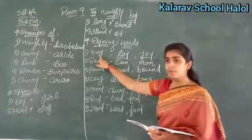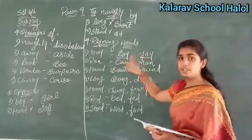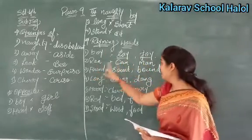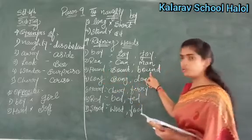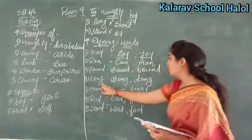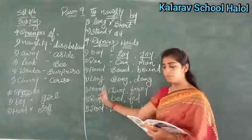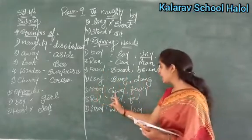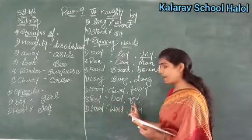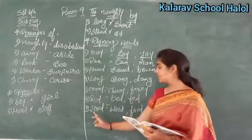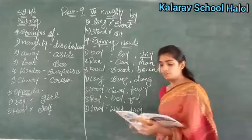See from the beginning: boy — toy, joy; ren — can, men; found — sound, bound; long — song, gong; merry — cherry, perry; red — bed, fed; and the last: stood — wood, food. Okay?